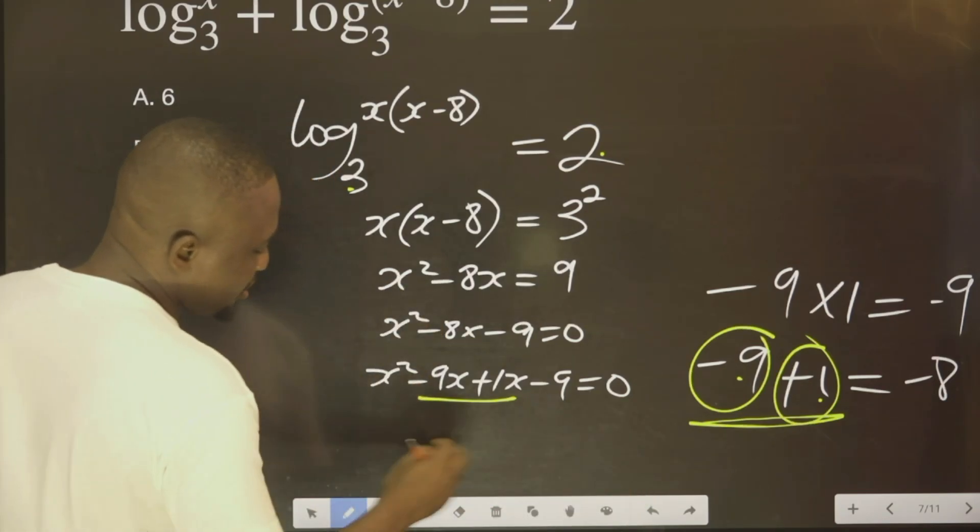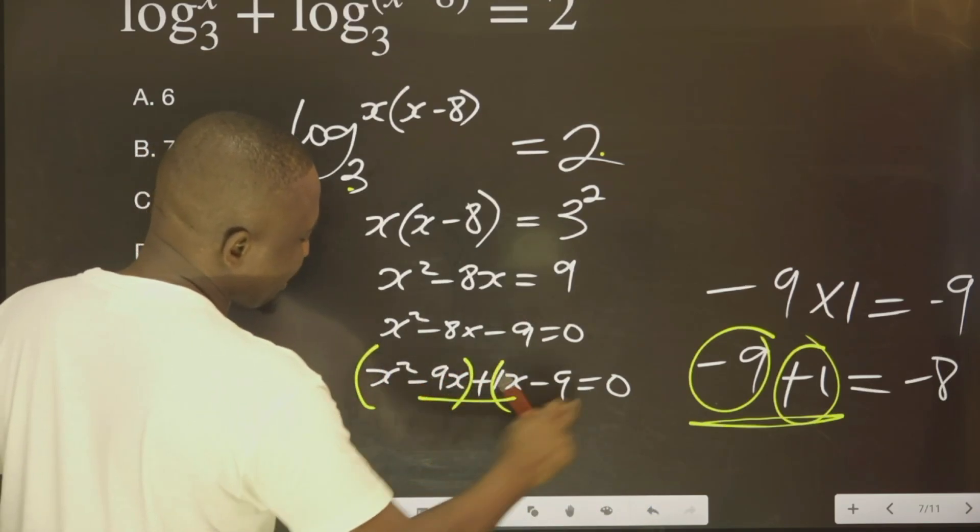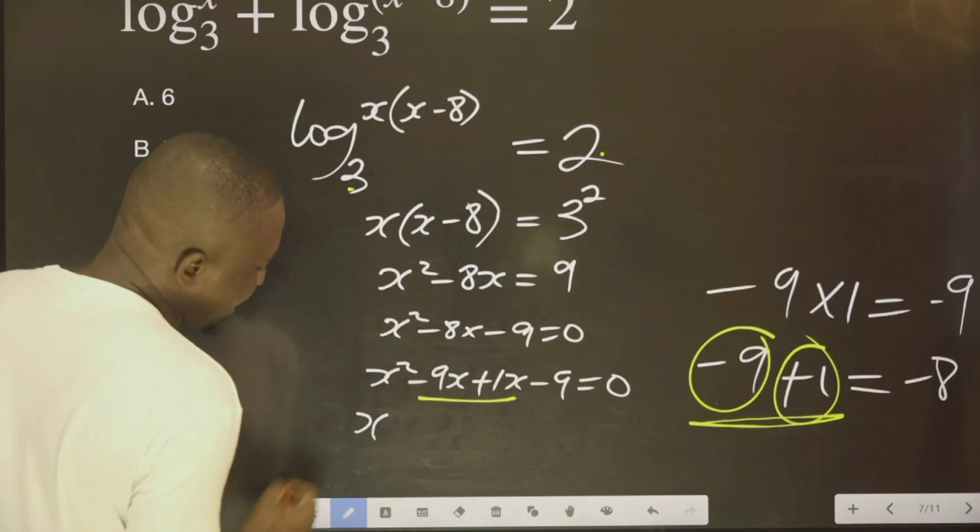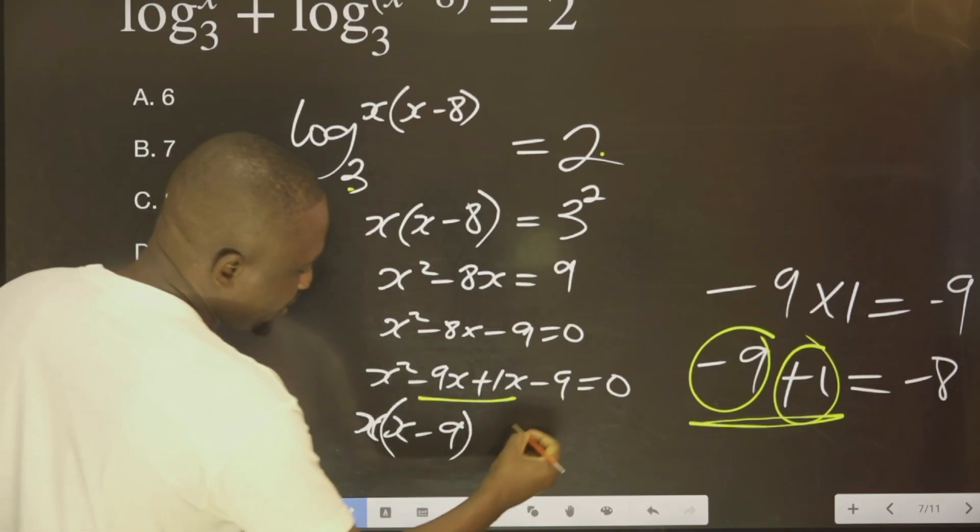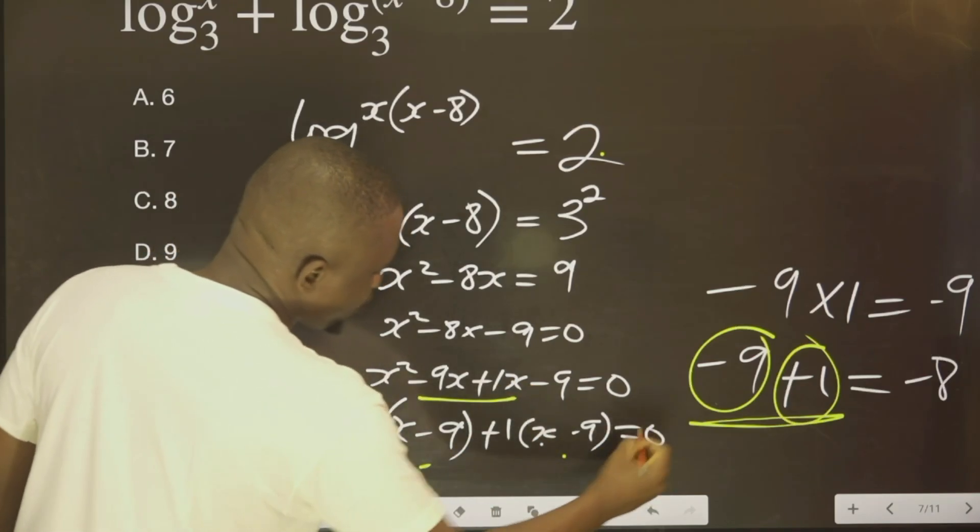Now that you have done that, all we need to do now is to group these guys. You group this and this. You group this and this. So we bring x out from here. What is remaining? When you bring x out, x remains. Minus 9 now. You repeat it. You repeat this. What can you multiply this together? That is 1. That is plus 1. Equal to 0.